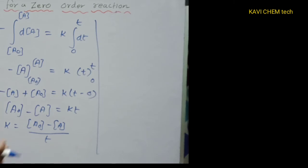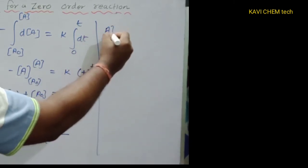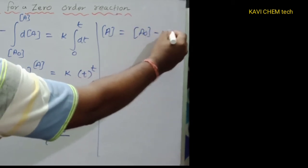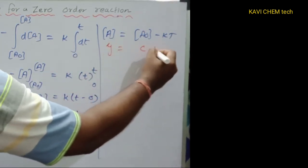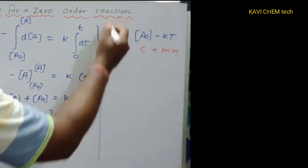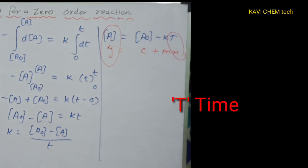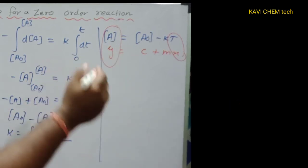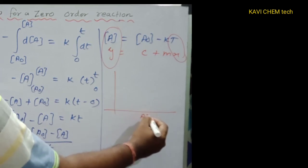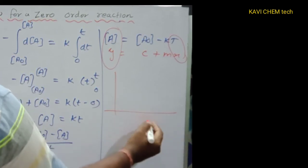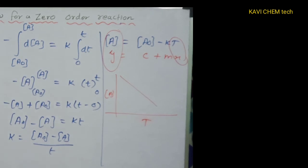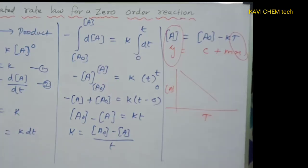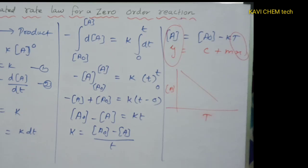Rewriting the equation: [A] = [A₀] − Kt. Comparing with the straight line equation y = mx + c, here y is [A] and x is time t, and the slope is negative K. Plotting time on the x-axis and concentration of A on the y-axis, you get a straight line with negative slope K. Both derivations — for zero order and first order — are very important from an exam point of view. Thank you.